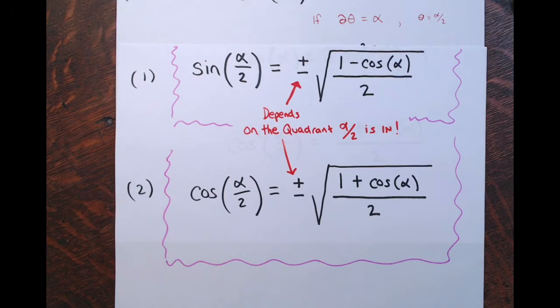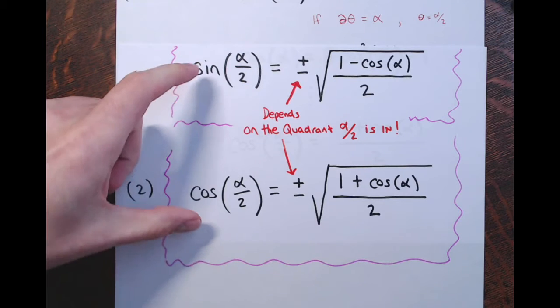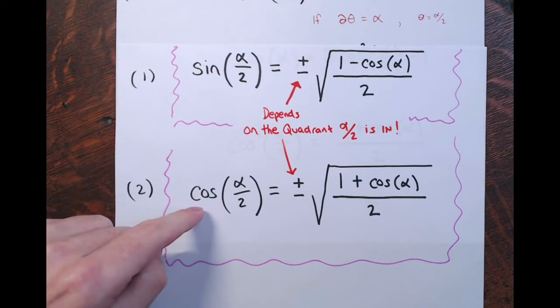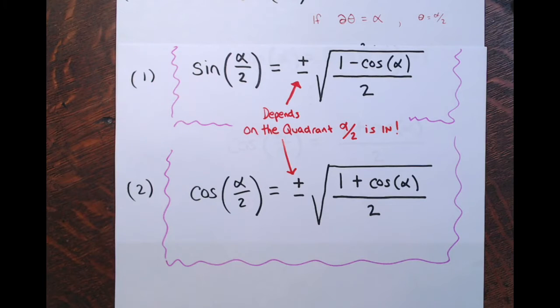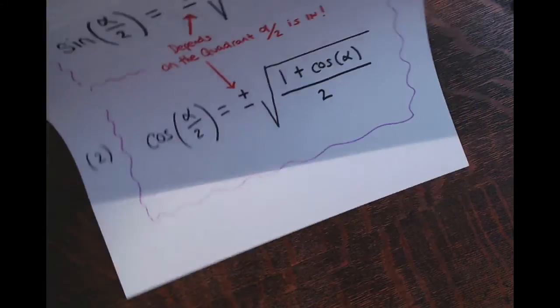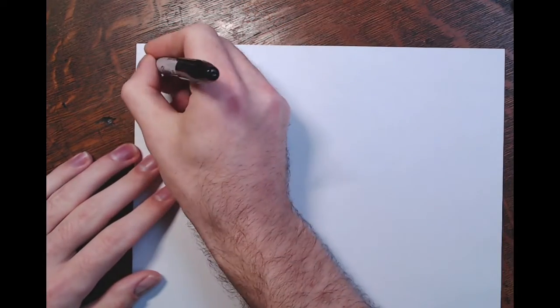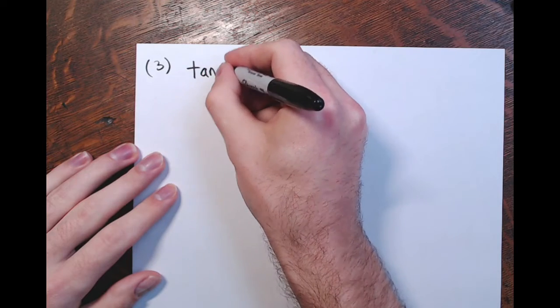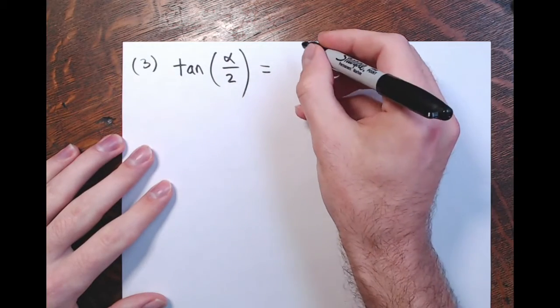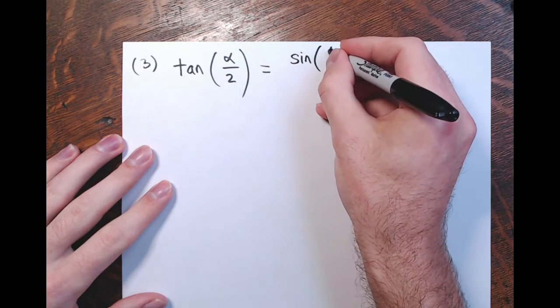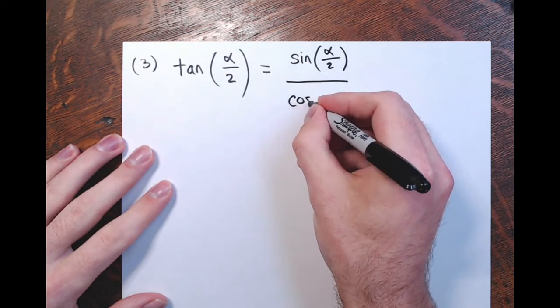Finally, the tricky one: the tangent of half an angle. Remember, if you know the sine of an angle and the cosine of that same angle, just divide those and you get the tangent of that angle. So this will be number three for our half angle formulas. If I want the tangent of half of alpha, I'm going to use my formula for the sine of half an angle divided by the cosine of that half an angle.